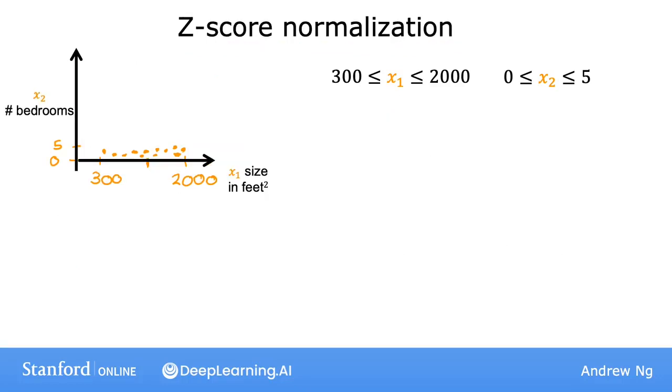There's one last common rescaling method called z-score normalization. To implement z-score normalization, you need to calculate something called the standard deviation of each feature. If you don't know what a standard deviation is, don't worry about it. You won't need to know it for this class. Or if you've heard of the normal distribution or the bell-shaped curve, sometimes also called the Gaussian distribution, this is what the standard deviation for the normal distribution looks like. But if you haven't heard of this, you don't need to worry about that either.